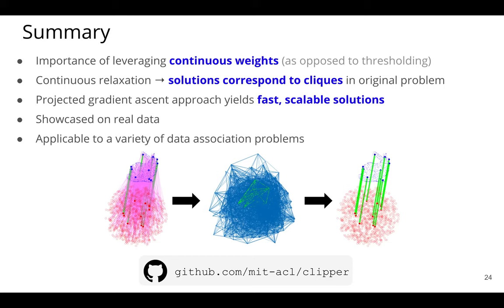So in summary, what we've talked about here is the importance of leveraging continuous weights as opposed to just thresholding. So the problem formulation here really matters, and that's finding these dense cliques in the consistency graph. We also talked about the continuous relaxation. We talked about the importance of cliques. We showed results from our projected gradient descent approach that yields fast scalable solutions. We talked about how this can be applied on real data, and also how this is applicable to a variety of data association problems.